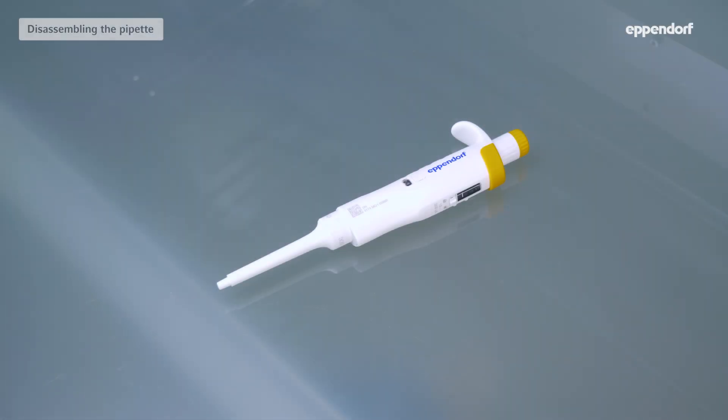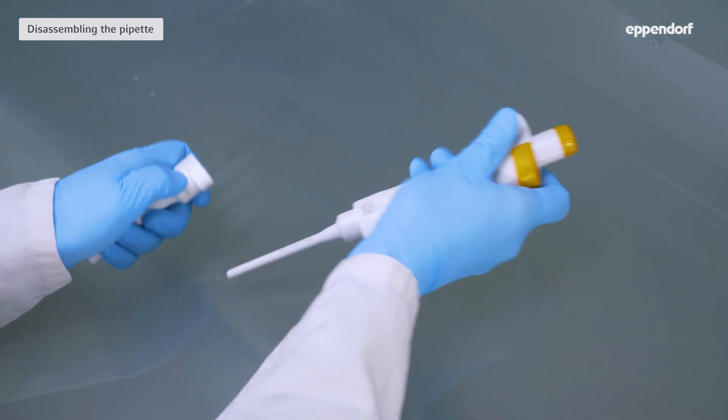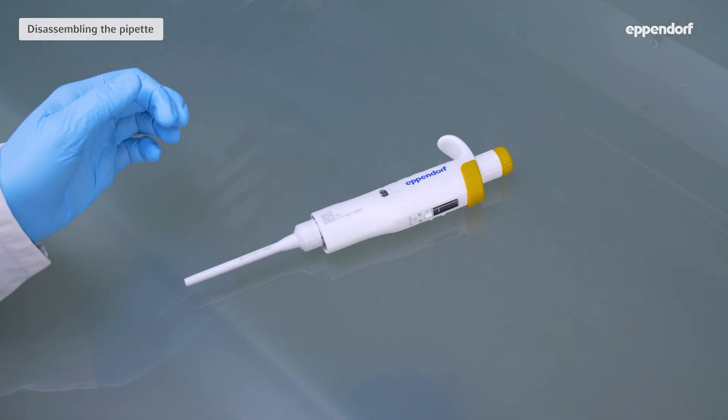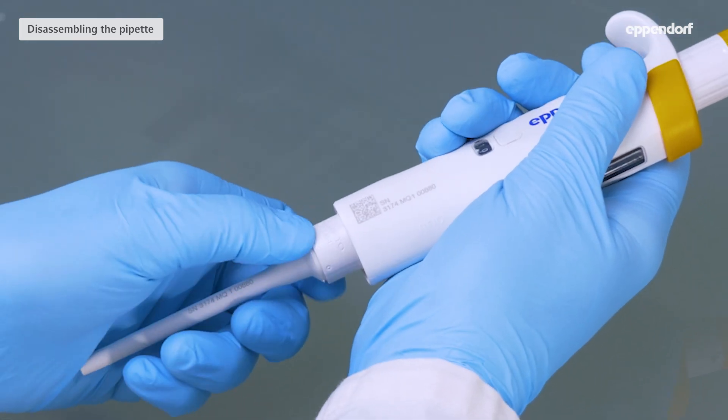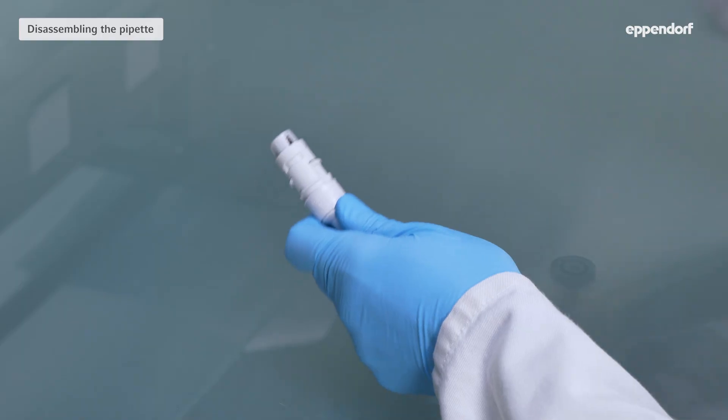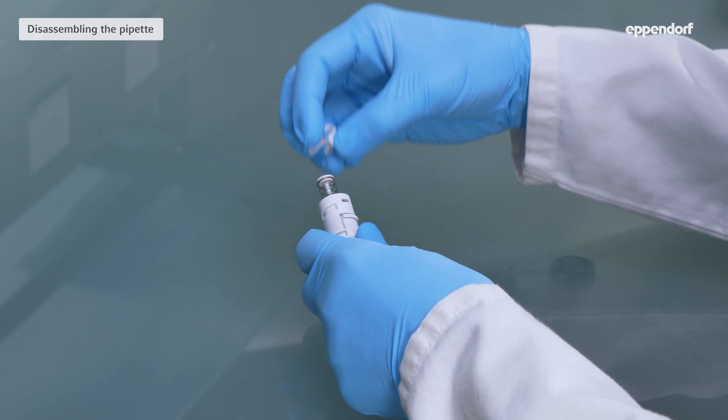To disassemble the lower part of pipettes up to one milliliter, push down the ejector button and pull off the ejector sleeve. Push the labeled ring upwards to release the lower part. Gently squeeze the piston mount to release it and remove the piston and piston spring.